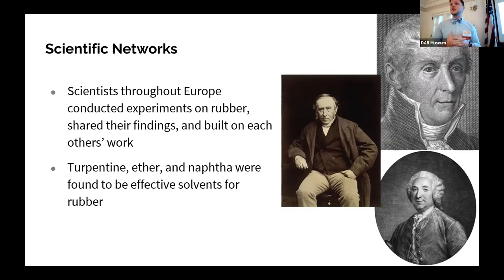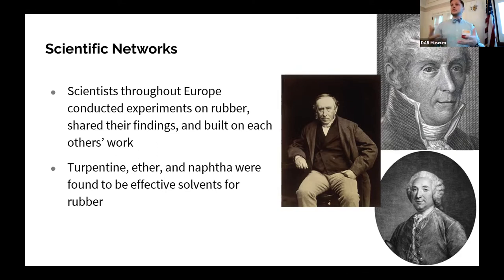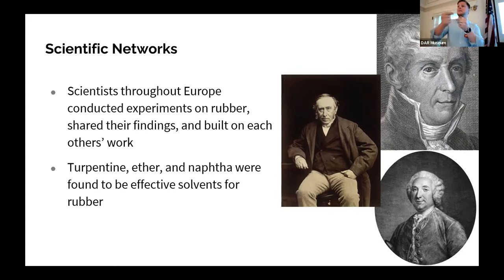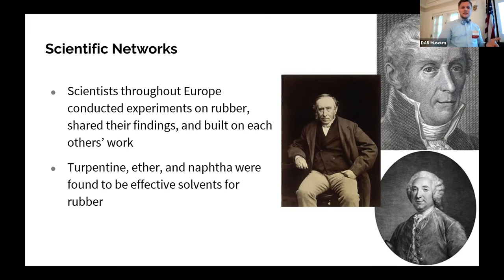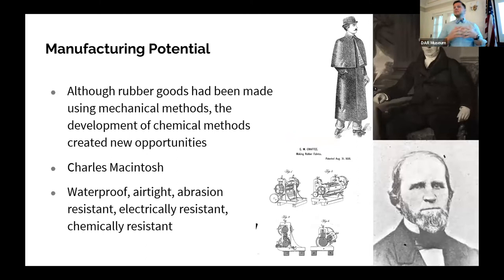A bit later we get James Syne, born in 1799, a Scottish physician who discovered that naphtha — which can be derived from coal tar — was an effective solvent. Really, all of these thinkers were engaged in trying to find a way to reliquify solid rubber so that they could put it to the same uses that indigenous peoples did, but in Europe. Having identified turpentine, ether, and naphtha as effective solvents, this opened the door for much greater commercial potential, which came primarily in the United Kingdom through Charles Macintosh, and primarily in the United States through Edwin Chaffee.